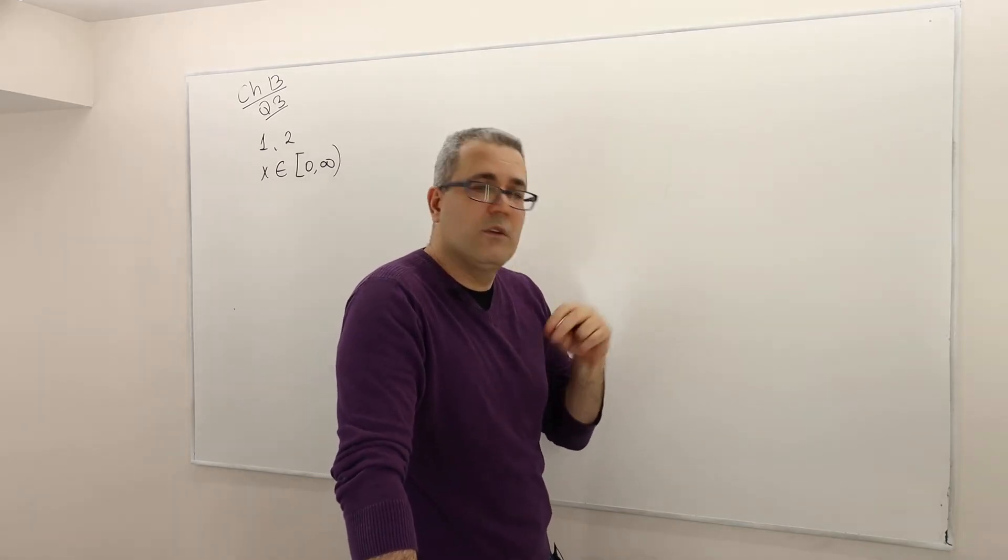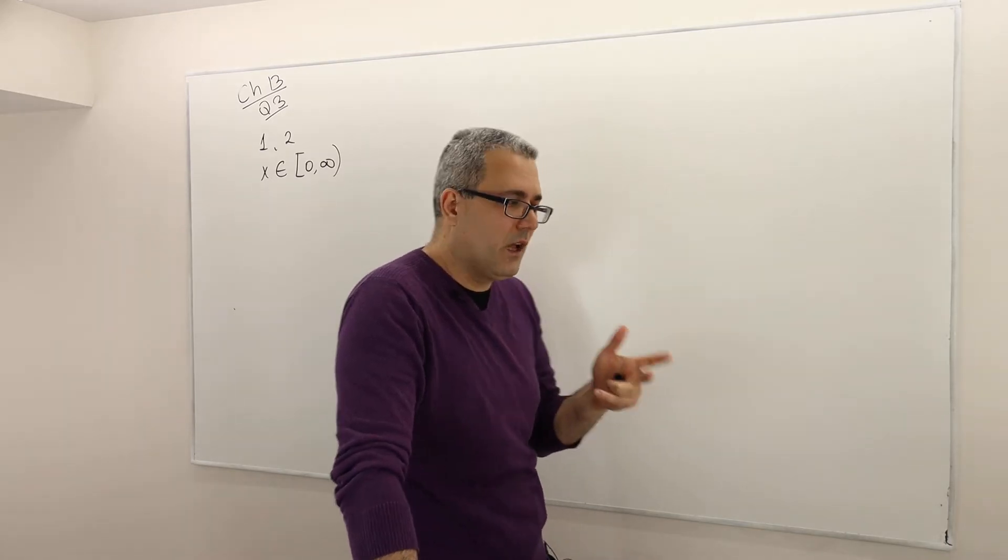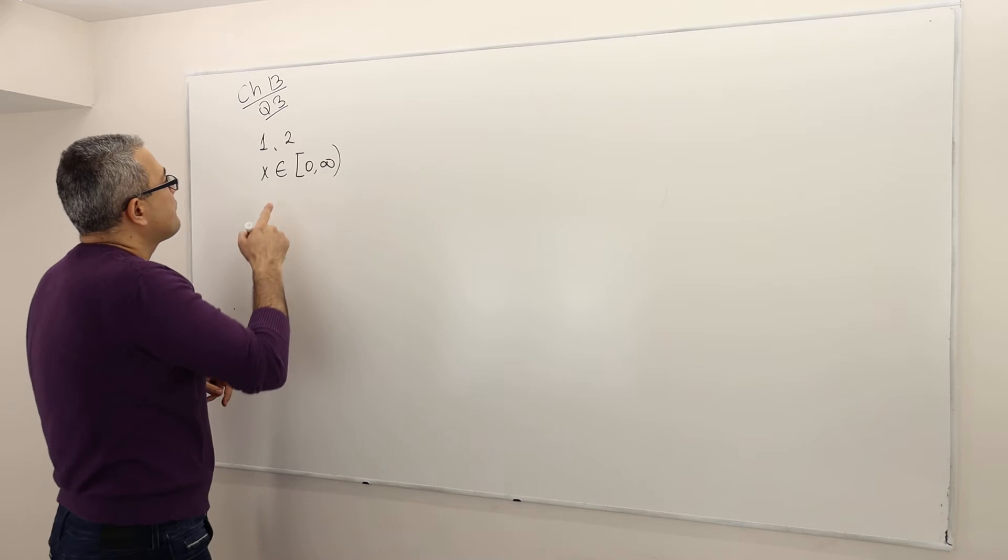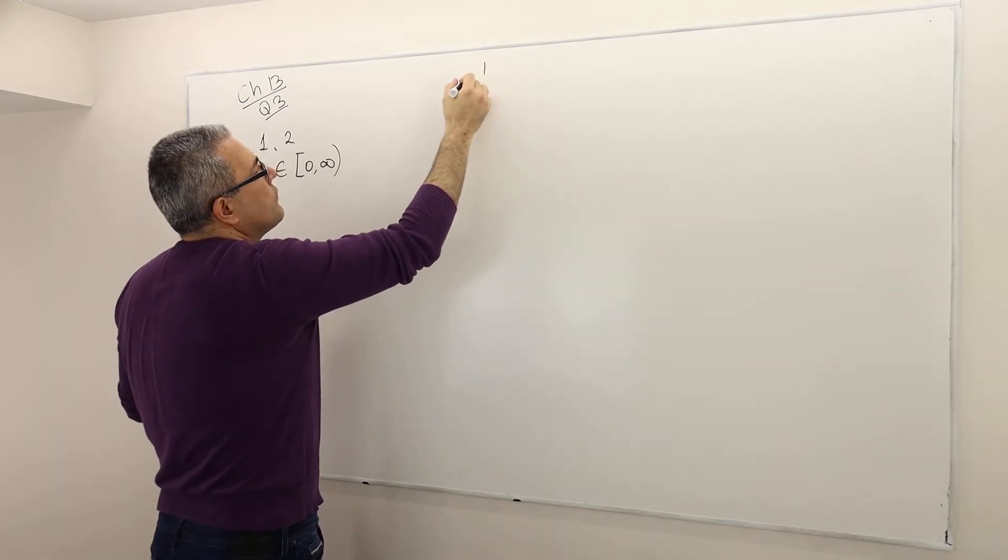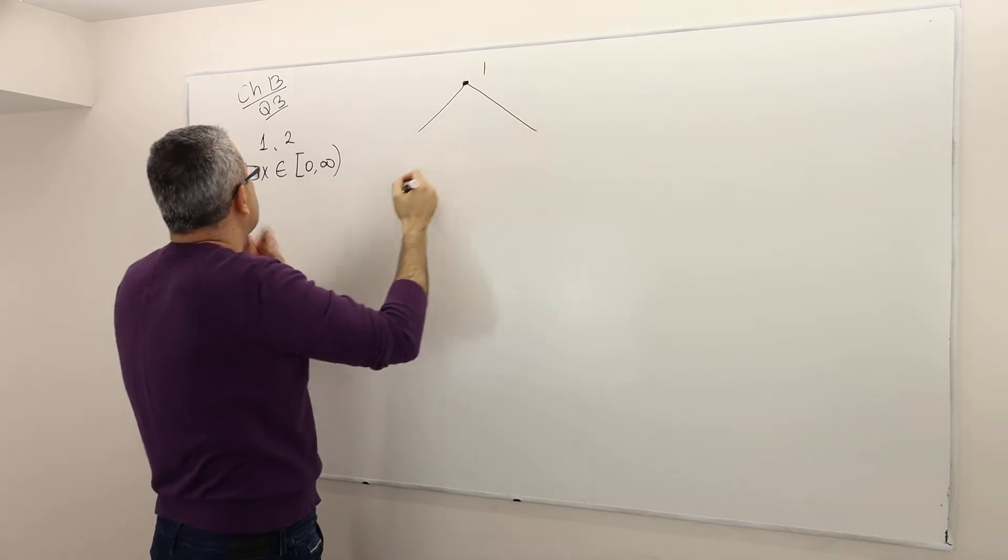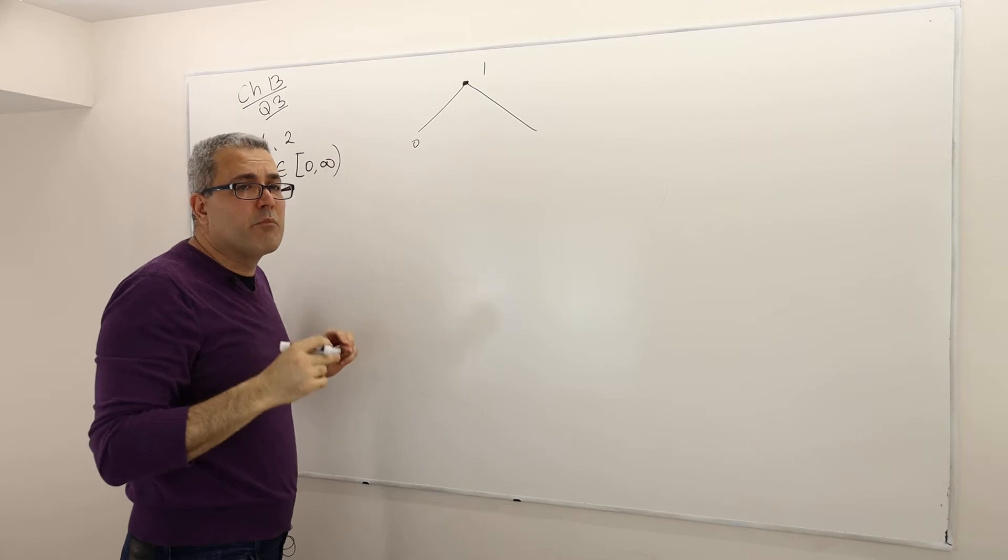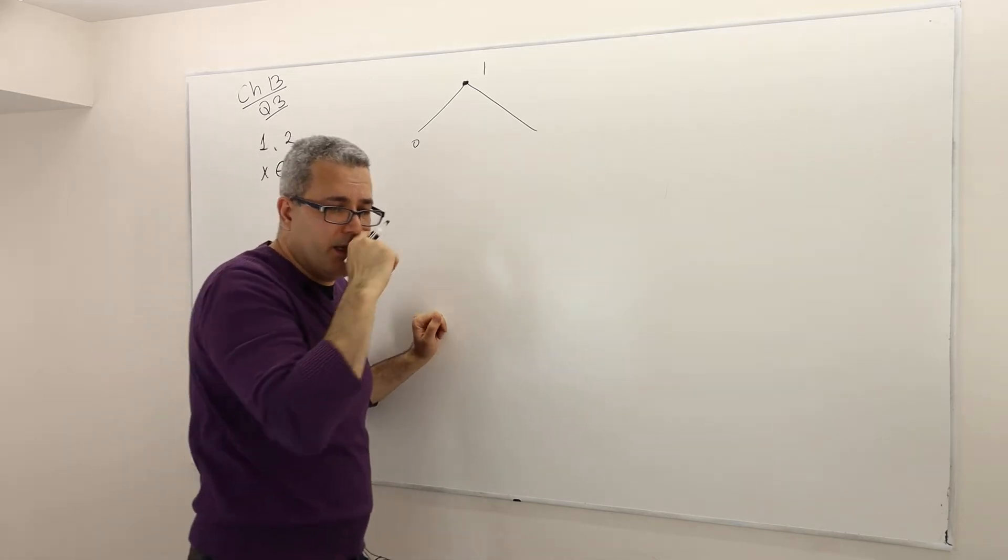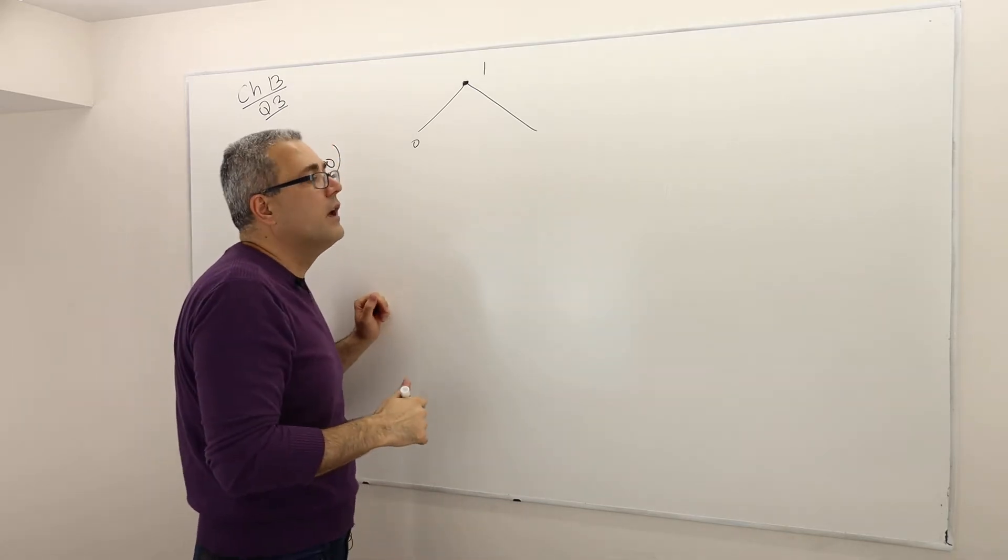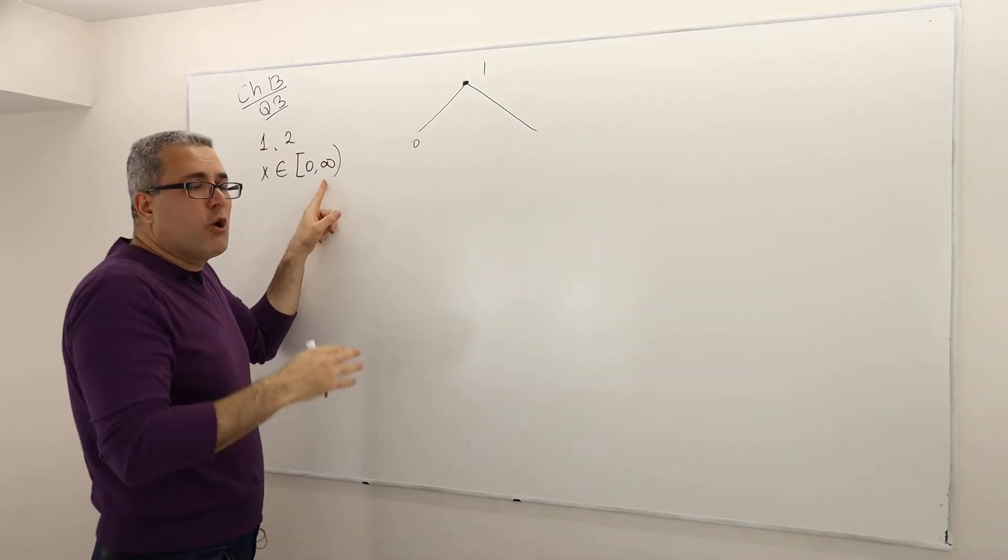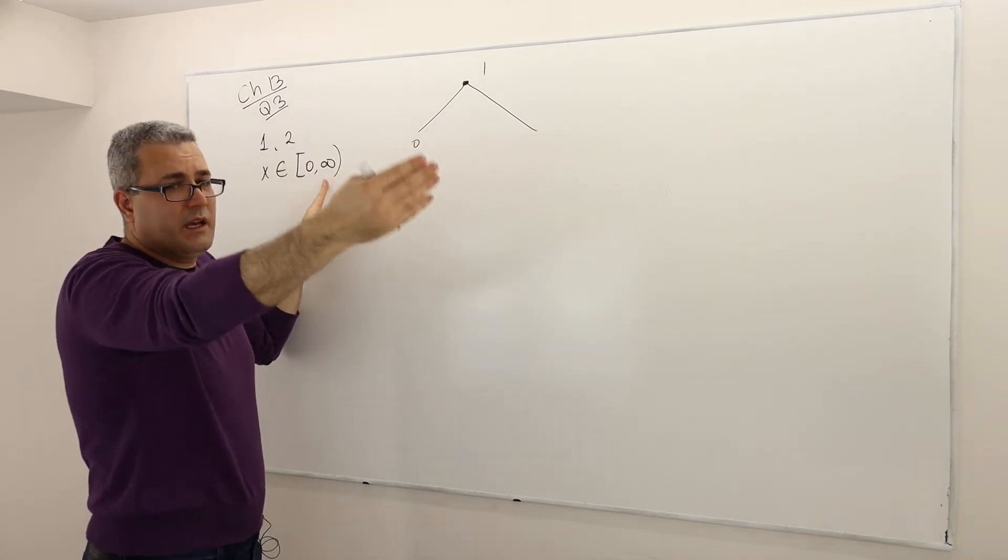In the extensive form, it doesn't ask to apply the concept of backward induction, but I'll do it. So player 1 moves. He chooses a number between 0 to infinity. Well, infinity is not a number to pick. You can't choose x equal infinity. It's not a number that you can pick. It says there's no upper bound. Whatever number you pick, there's always a bigger one.